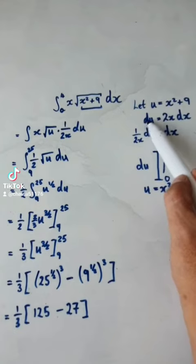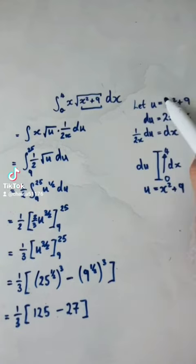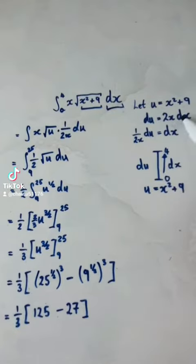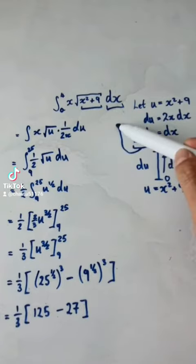So differentiate both sides. So du equals this. Differentiate the whole thing here. That would be 2x and then dx. So we want to get dx on its own. So divide both sides by 2x. That would then give you this. So now we can put this into here.